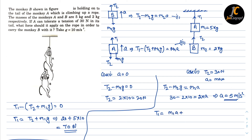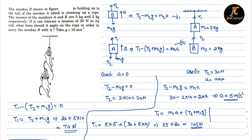T1 equals M1 times a plus T2 plus M1g. So T1 = 5 times 5 plus 30 plus 5 times 10, which equals 25 plus 80, giving T1 = 105 newtons. Therefore, the minimum force monkey A should apply on the rope is 70 newtons and the maximum is 105 newtons. This is the solution to the problem.